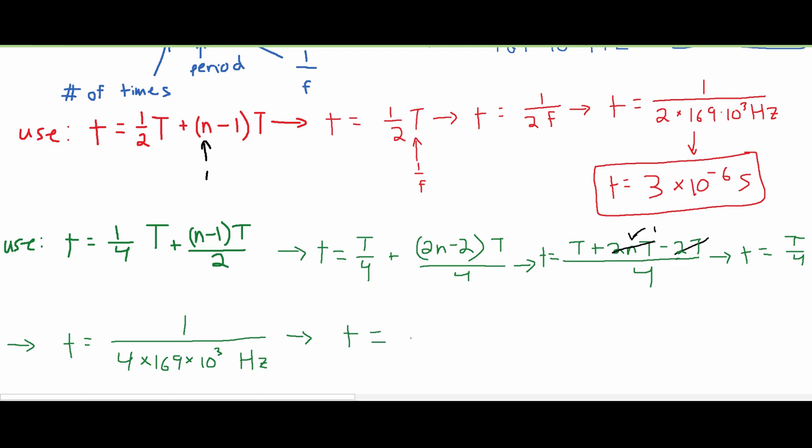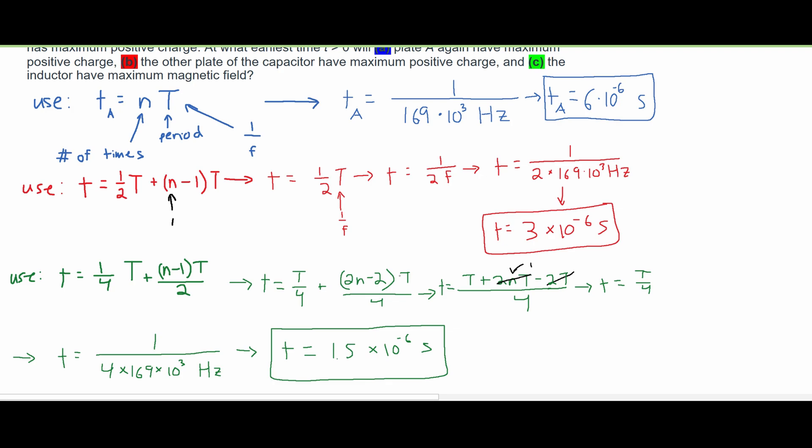times 10 negative 6 seconds. Rounding is only used for simplification here, and normally it is not acceptable. So it's generally good practice to write out up to the 3rd significant figure. And these are all answers for A, B, and C.